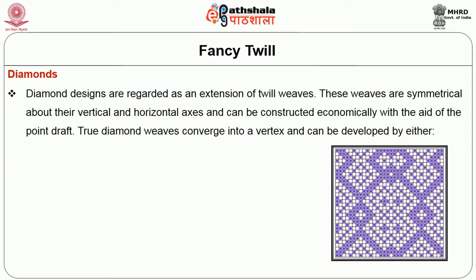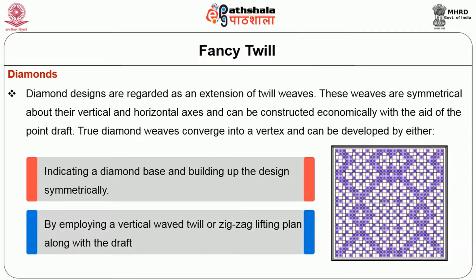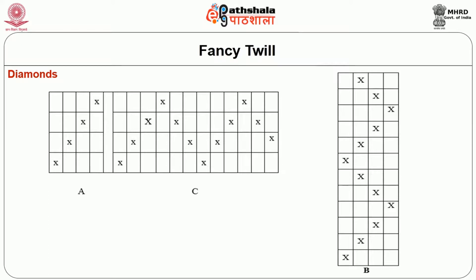The next variation is diamond weaves. Diamond designs are regarded as an extension of twill weave, being symmetrical about the vertical and horizontal axis and constructed economically with the aid of a point draft. True diamond weaves converge into a vertex and can be developed by either indicating a diamond base and building up the design symmetrically, or by employing a vertical zigzag or horizontal zigzag lifting plan along the draft. Figure 1.4 illustrates the basic 1-up-3-down twill arranged at zigzag vertically and horizontally at B and C respectively.